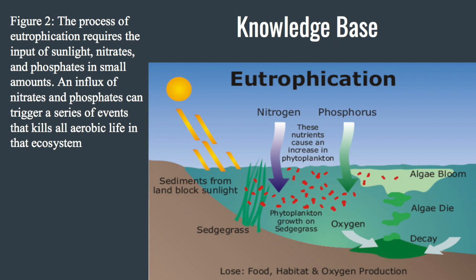The nitrates and phosphates then cause rapid growth in the algae. When the algae die, the aerobic microorganisms will break down and consume all the dissolved oxygen in the water in the process of breaking down the plants. After this, the only organisms that will be able to survive in that ecosystem will be anaerobic organisms, and the aerobic organisms will die out.